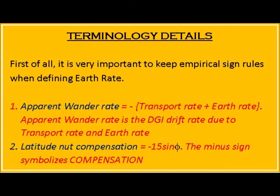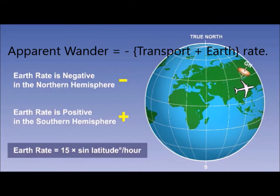Terminology details. It is very important to keep empirical sign rules when defining earth rate. Point 1: Apparent wander rate equals minus (transport rate plus earth rate). Apparent wander rate is the DI drift rate due to transport rate and earth rate. Point 2: Latitude nut compensation equals minus 15 sin φ. The minus sign symbolizes compensation. Earth rate and transport wander occur at the same time.